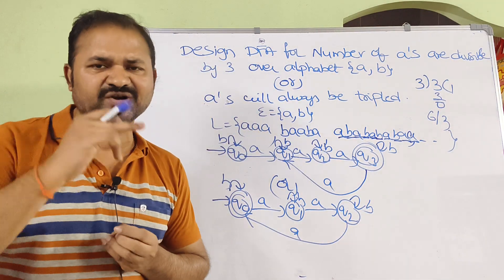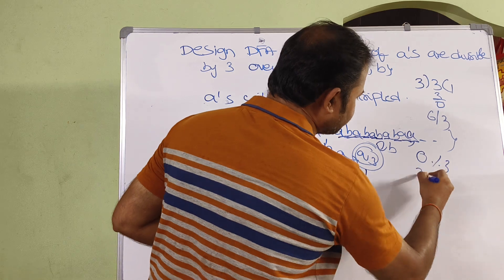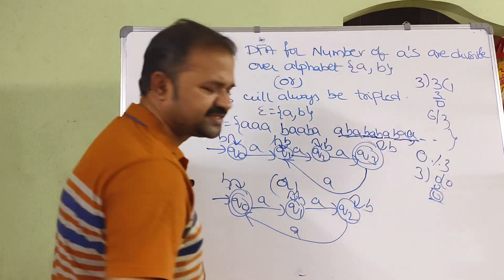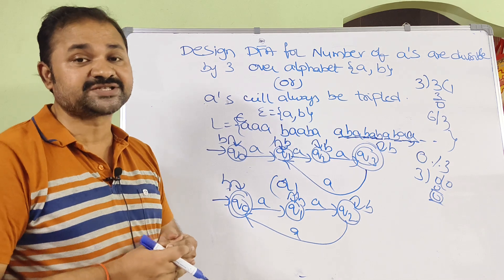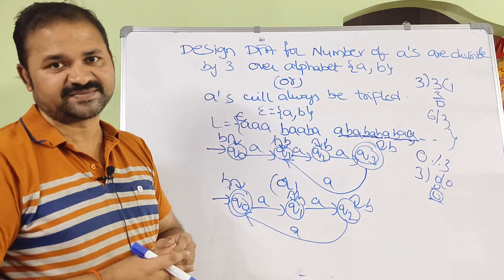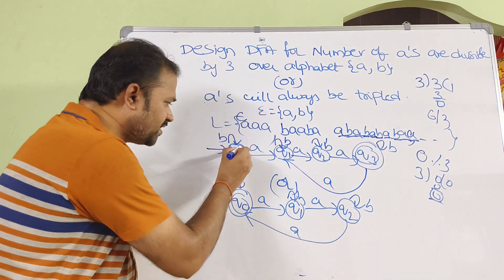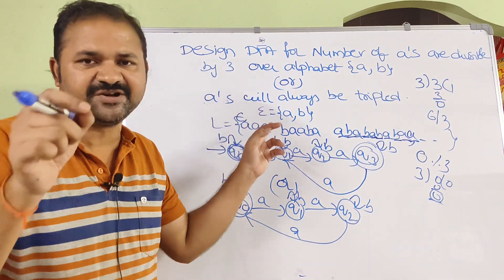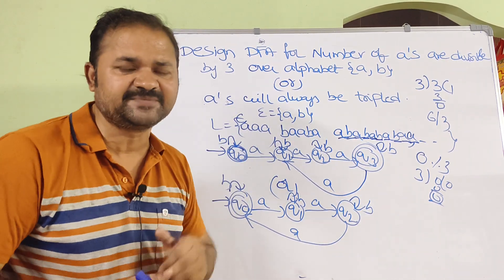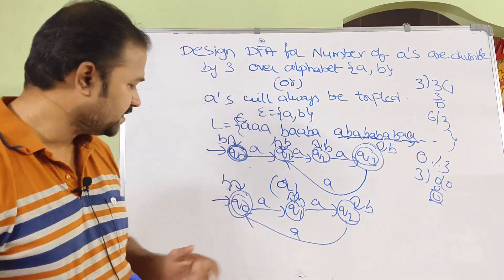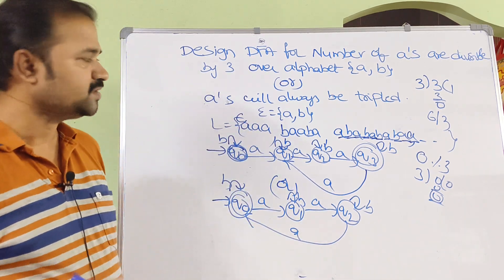We also know that 0 is divisible by 3, since 0 modulo 3 equals 0. So epsilon — the empty string with 0 A's — is also a valid string in the language. If the language includes epsilon, then we must make Q0 a final state. If the language does not contain epsilon, there is no need to make Q0 a final state. In the 3-state DFA, Q0 is already the final state, so it can also accept epsilon. In this way we can solve the problem.